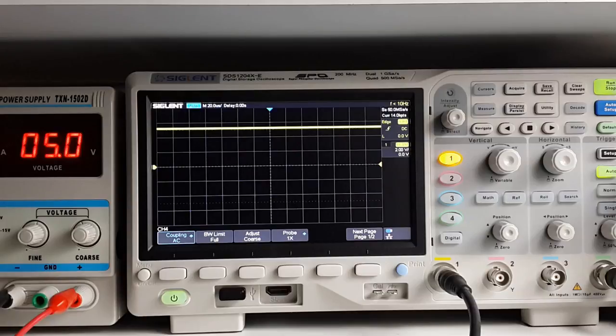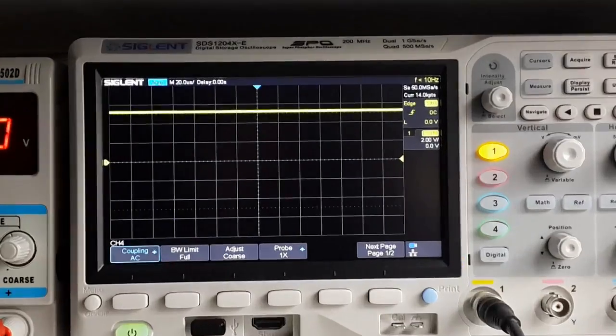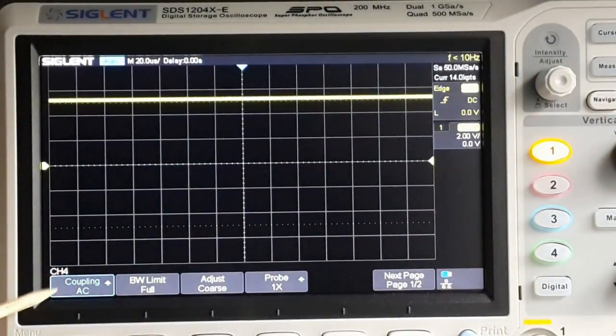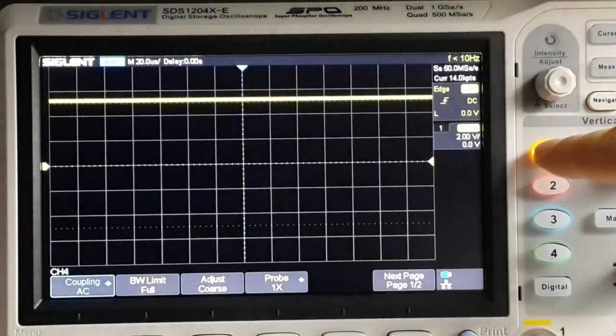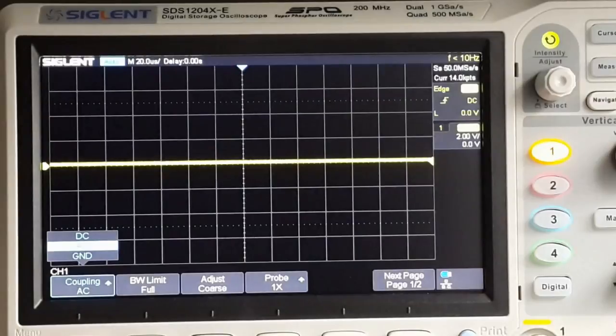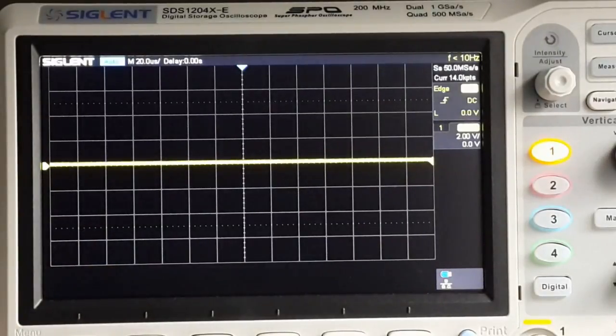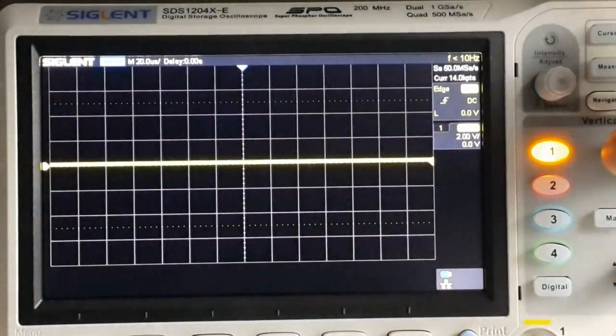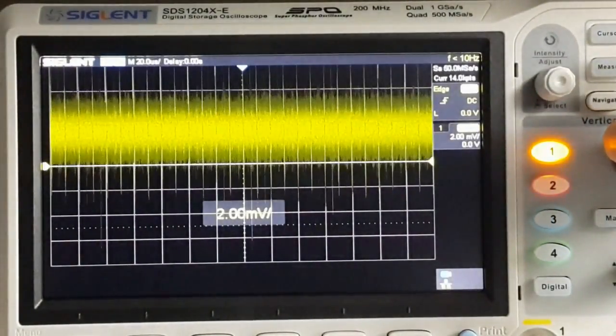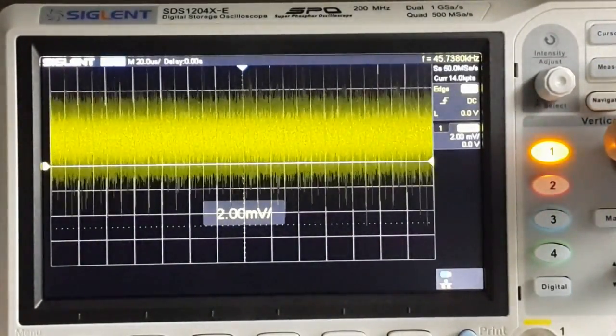Now in channel 1 I will set up coupling to AC. DC is gone, what I see now is just pure AC.